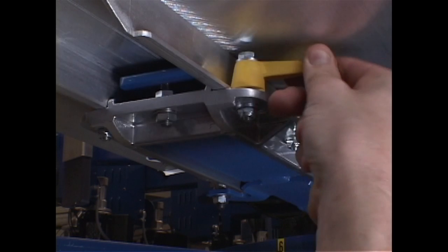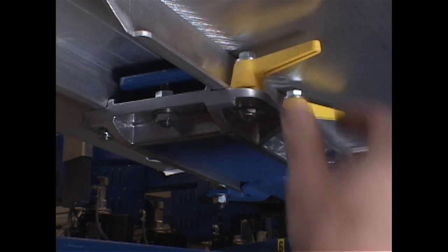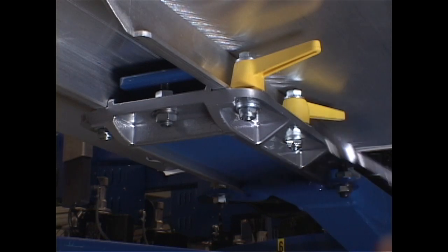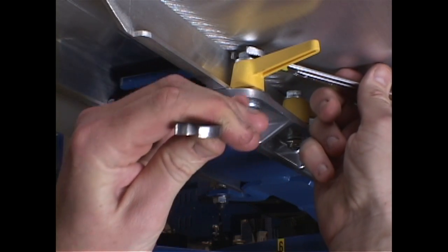The pallet locks should be adjusted to provide a tight lockdown of pallets. Loose locks will allow the TriLock pallet to shift, causing a loss of registration accuracy.